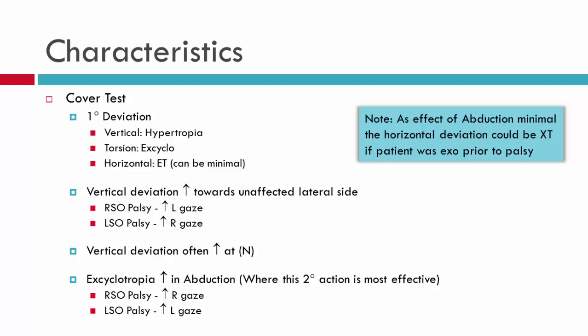This relates back to Park's three-step. When you take the patient with a right superior oblique palsy and move them into left gaze, you're moving the eyes into adduction — the position in which the right superior oblique has its field of action. In adduction, you will see an increase in the height. You may also find an increase in the vertical deviation at near. The greatest excyclotropia will occur where the secondary action takes place, which will be in abduction — specifically in dextrodepression for the right superior oblique.